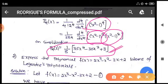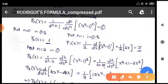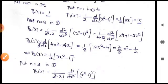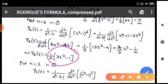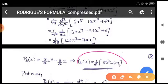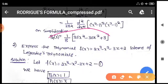You need to remember all the expressions: P0(x) = 1, P1(x) = x, P2(x) = (1/2)(3x² - 1), P3(x) = (1/2)(5x³ - 3x), and P4(x) = (1/8)(35x⁴ - 30x² + 3).